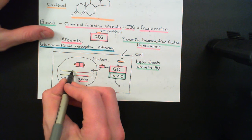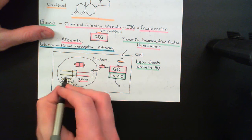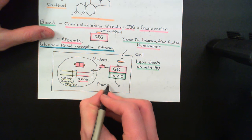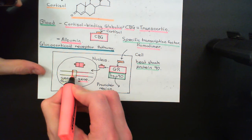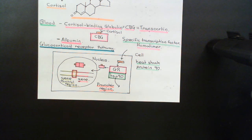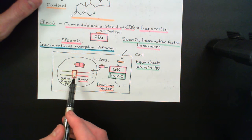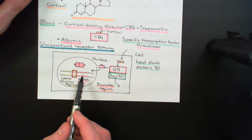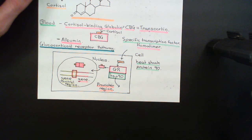Now, one portion of the gene control region — the portion immediately upstream of the gene — is known as the promoter region. This is the place where the RNA polymerase II complex, which is actually going to transcribe the gene, is going to assemble. The main way you control how much a gene is expressed is by controlling how much transcription actually occurs, and the promoter region is where RNA polymerase II assembles to do that.